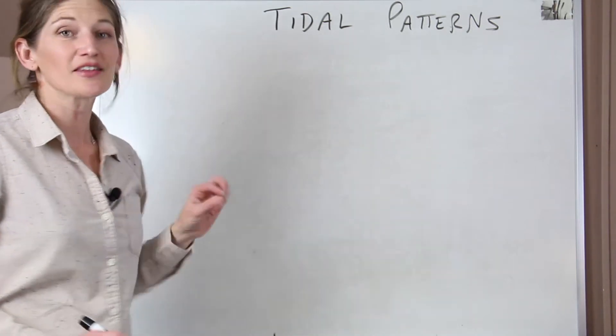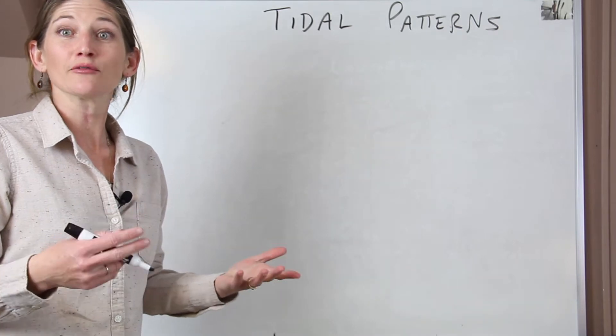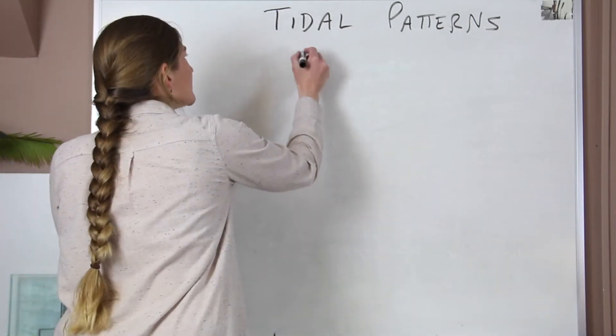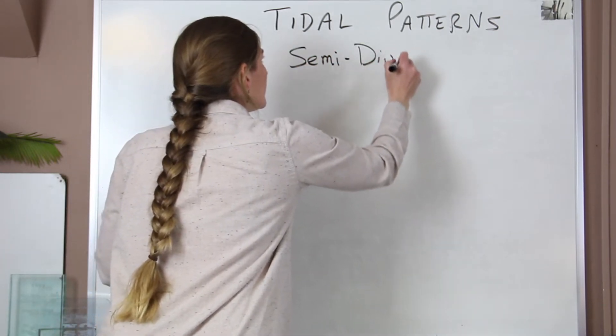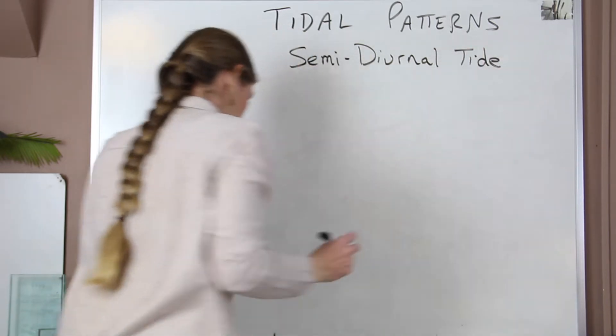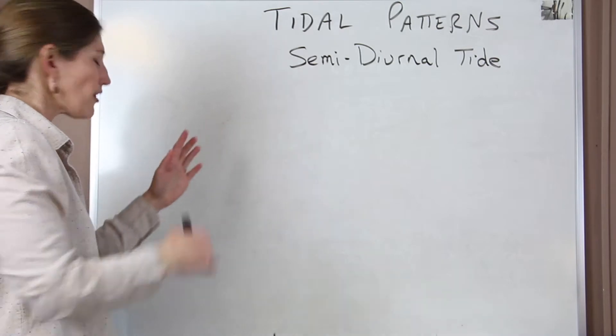Alright, in this lecture we're going to look at the three tidal patterns that we see at different coastlines around the world. So the first one that we have is a semi-diurnal tide. For each of these, I'm going to explain what it is and then draw a chart so that you can see the pattern.